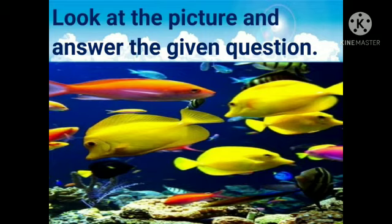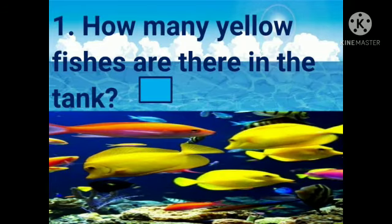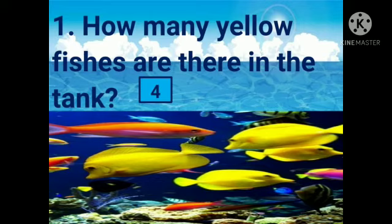Now we are going to see another picture and answer the questions. Look at the picture and answer the given questions. Write cardinal numbers. First question: how many yellow fishes are there in the tank? See the tank — there are four yellow fishes in the tank. We have written the answer: four.